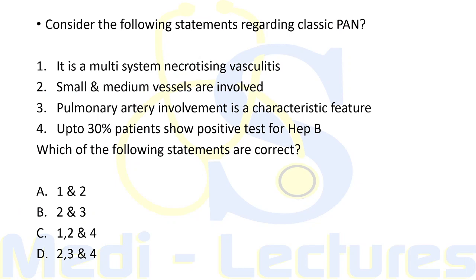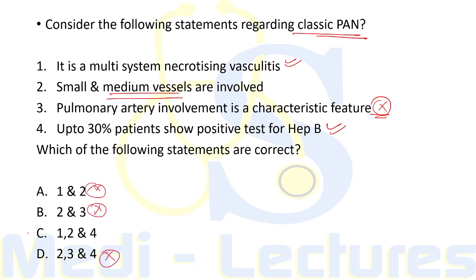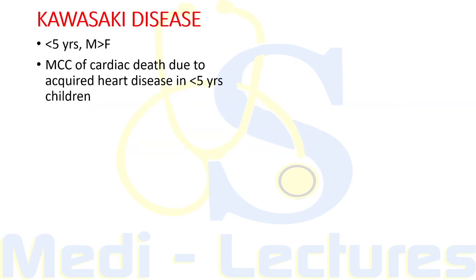Practice question: 'Statements regarding classical PAN — it is a multi-system necrotizing vasculitis' — true. 'Small and medium vessels are involved' — primarily medium vessel but some small vessels can be involved — partially true. 'Pulmonary artery involvement is a characteristic feature' — false, lungs are typically spared. 'Up to 30 percent patients show positive test for hepatitis B' — true. The correct option is C, as some small vessel involvement is also accepted.